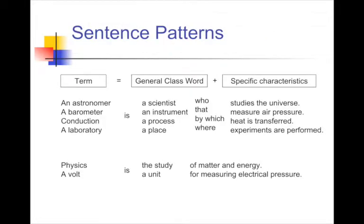A lot of times verb definitions require simple present tense and a verb 'to be.' The definite article 'the' is usually not used with the term being defined because definitions are generally statements. The structure is: the term equals a general class word plus specific characteristics. An astronomer is a scientist who studies the universe. A barometer is an instrument that measures air pressure. Conduction is a process by which heat is transferred. You can see this notion of general class plus specific characteristics that help it become unique, with the verb built in.